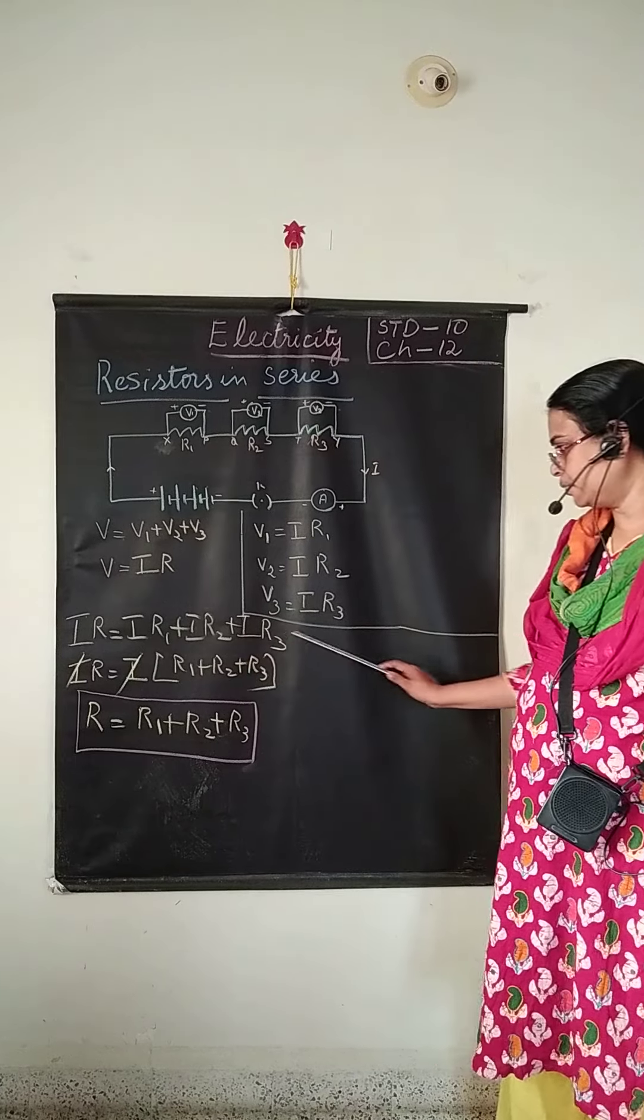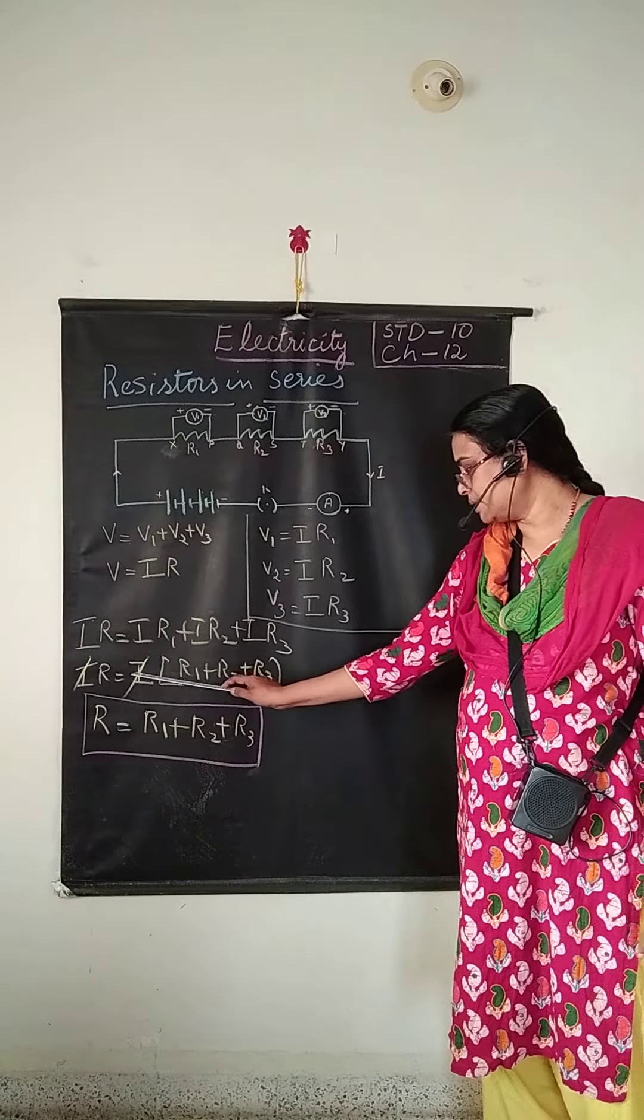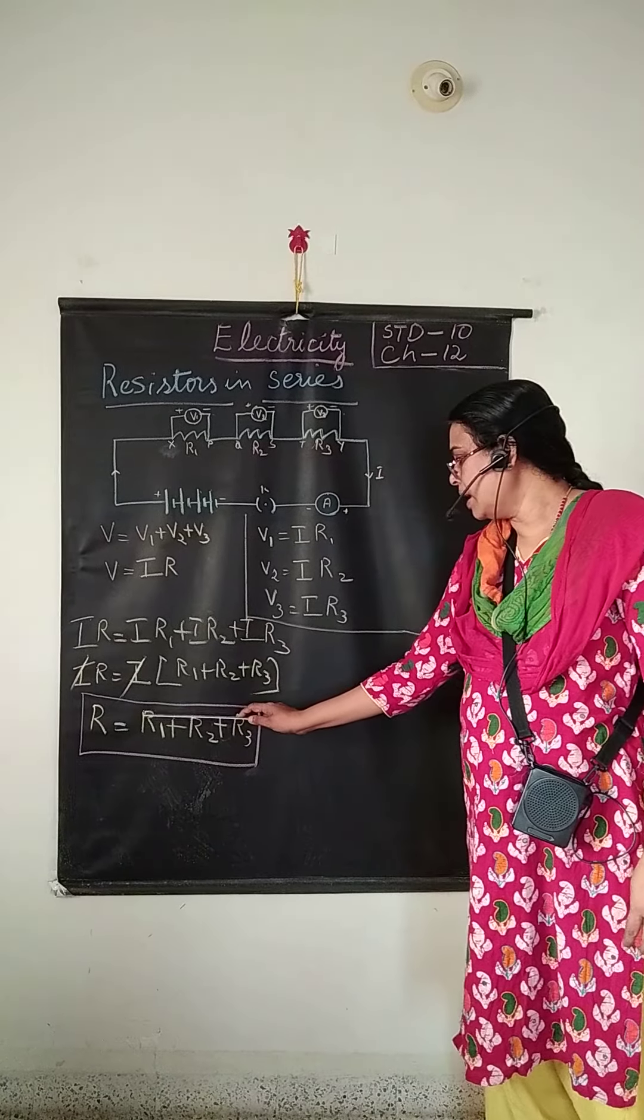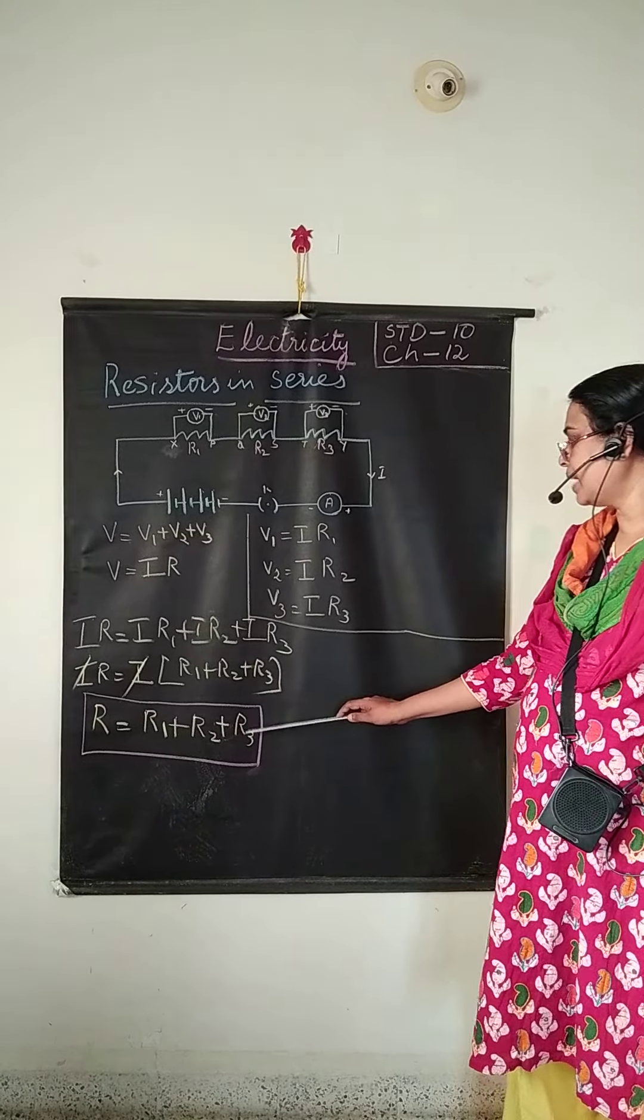Now you can see I is common factor over here. So just keep it outside. Then I and I get cancelled. So what is R? R is equal to R1 plus R2 plus R3.